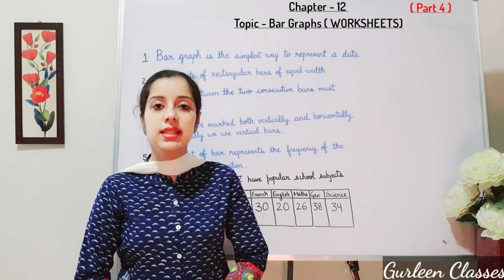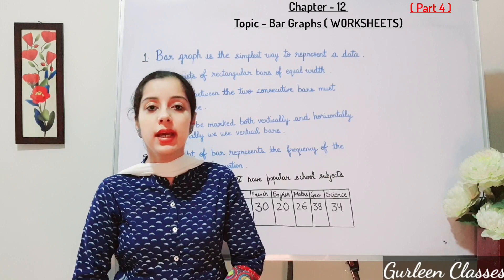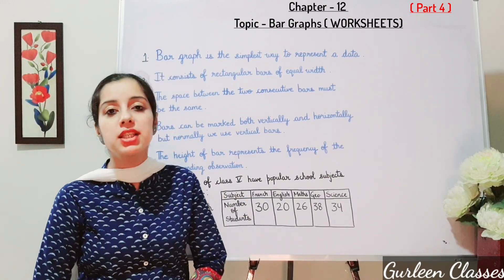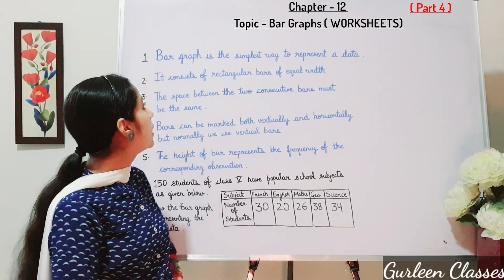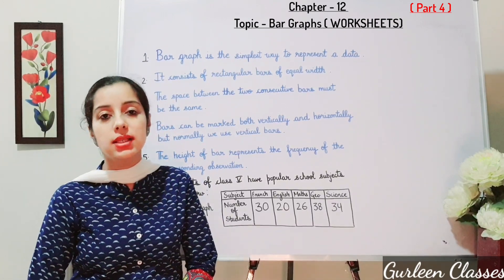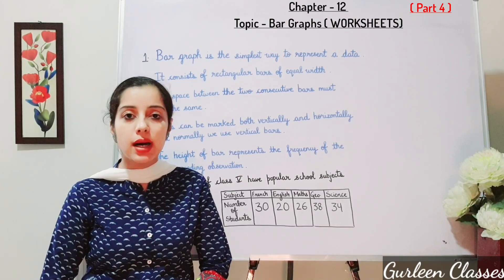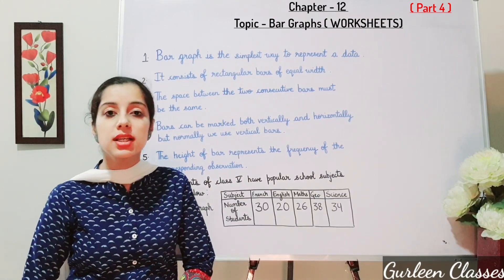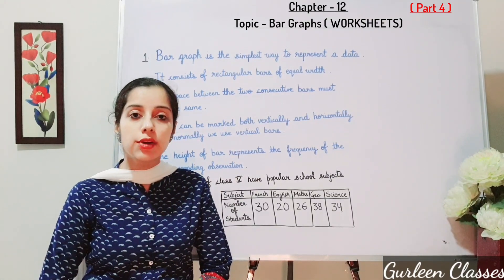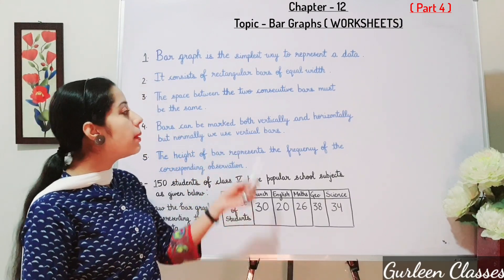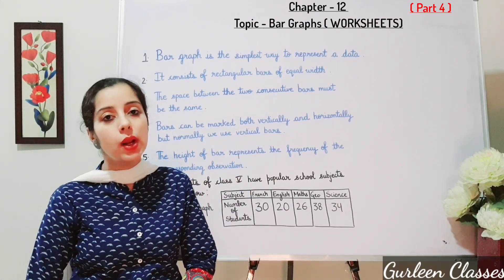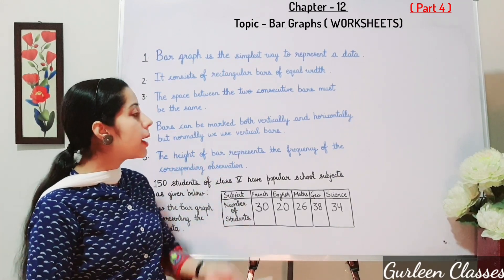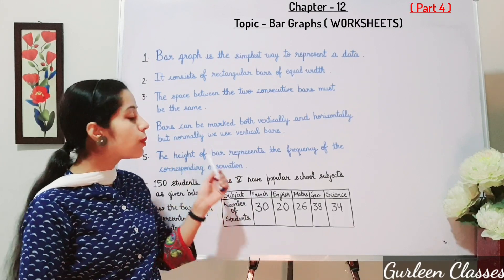Now let us discuss the construction of bar graphs or column graphs. Let us recall: a bar graph is the simplest way to represent data. It consists of rectangular bars of equal width. The space between two consecutive bars must be the same. Bars can be marked both vertically and horizontally, but normally we use vertical bars. The height of the bar represents the frequency of the corresponding observation.